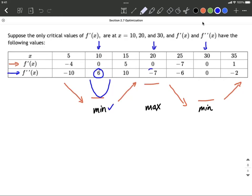If our second derivative is negative, that tells us our graph is concave down. When your graph is concave down at a critical number, you get a maximum.